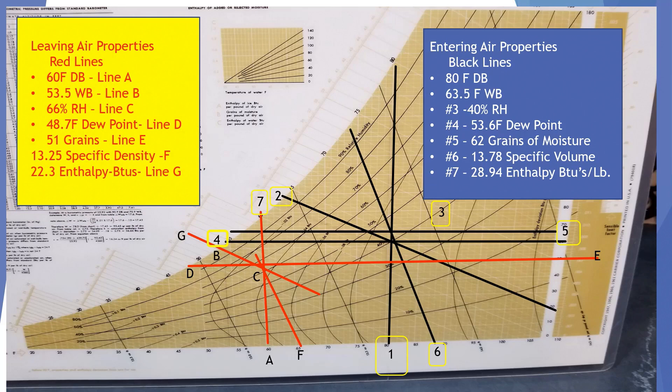On the other side of leaving air properties, which are the red lines, we have a 60 degree dry bulb temperature shown on line A. We have a 53.5 wet bulb temperature shown on line B. We have 66% relative humidity on line C. We have 48.7 degree dew point, which is line D. We have 51 grains of moisture on line E.